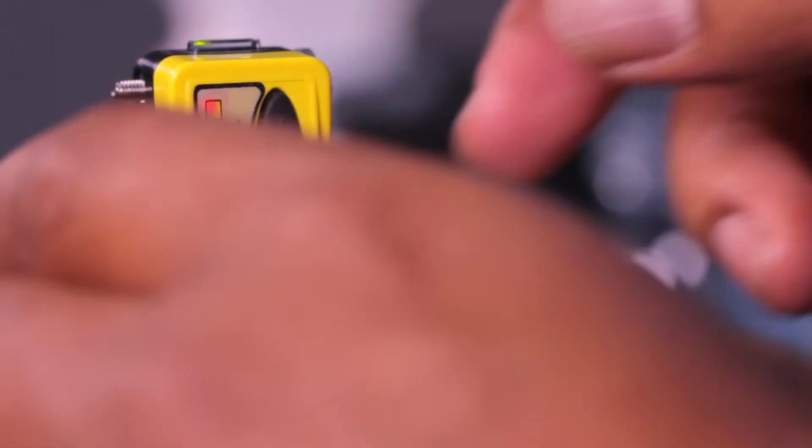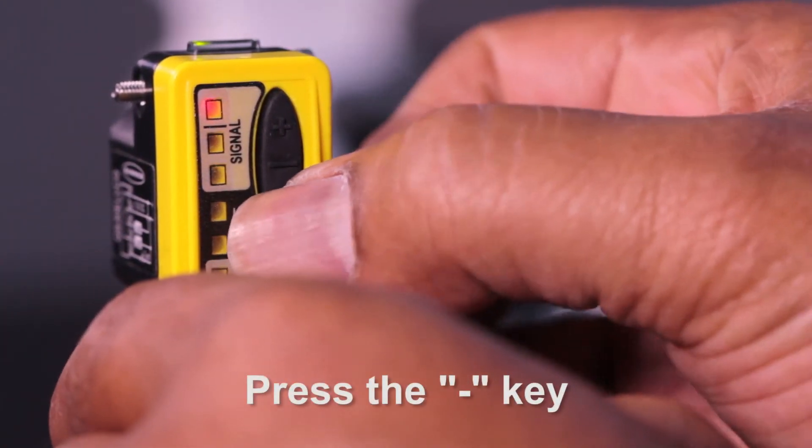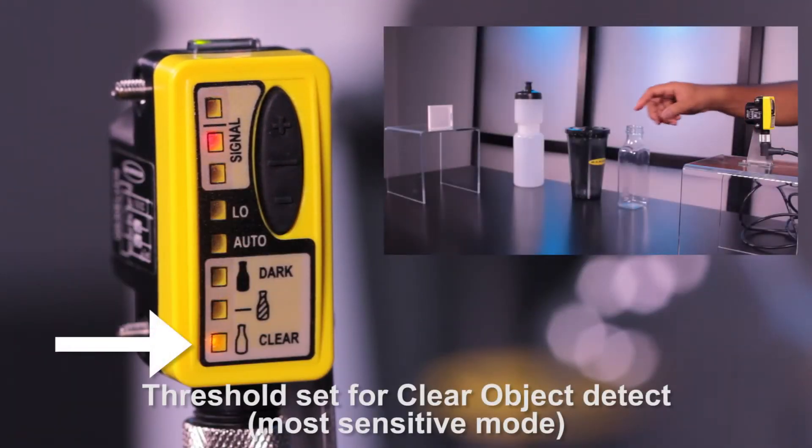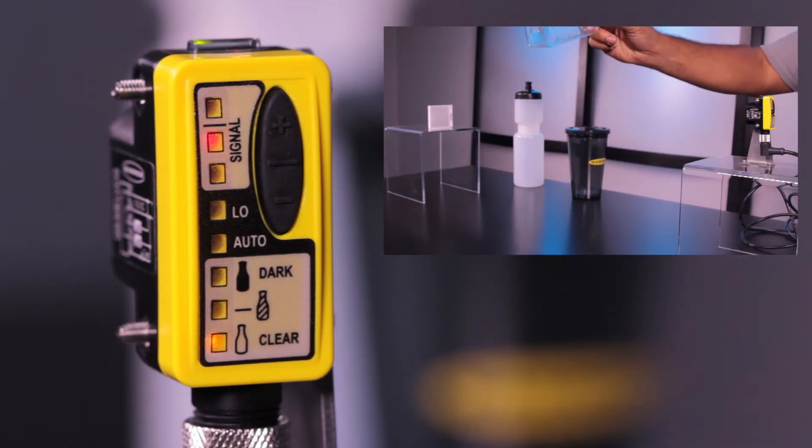To adjust the threshold, press the minus button until the LED matches the target you want to detect, in this case, the clear bottle.